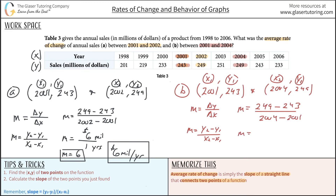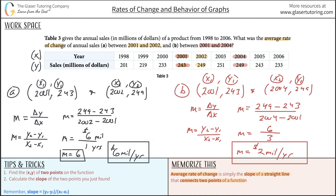Doing the subtraction, we get 6 over 3, which simplifies to 2. So the average rate of change is 2 million dollars per year for the interval from 2001 to 2004.